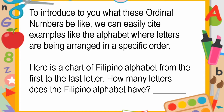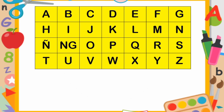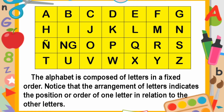To introduce what ordinal numbers look like, we can easily cite examples like the alphabet, where letters are arranged in a specific order. Here is a chart of Filipino alphabets from the first to the last letter. How many letters does the Filipino alphabet have? Write your answer on your paper. The alphabet is composed of letters in a fixed order. Notice that the arrangement of letters indicates the position or order of one letter in relation to other letters.